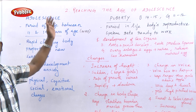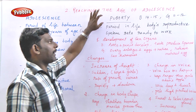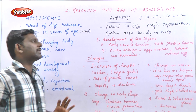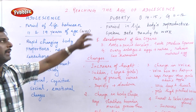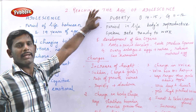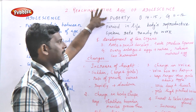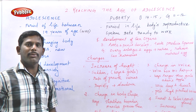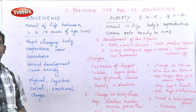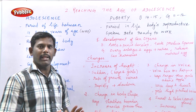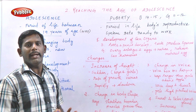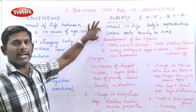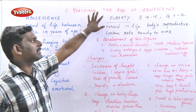Next is puberty. Puberty is a period in life when the body's reproductive system gets ready to work — when the reproductive system starts to function. Generally, boys attain puberty at age 14 to 15, and girls attain puberty at age 11 or 12. Puberty produces a lot of changes in our body.